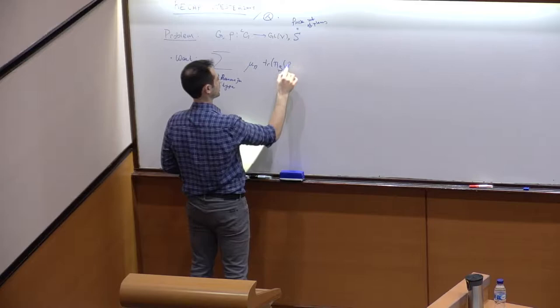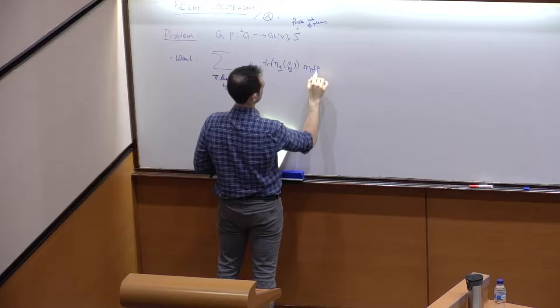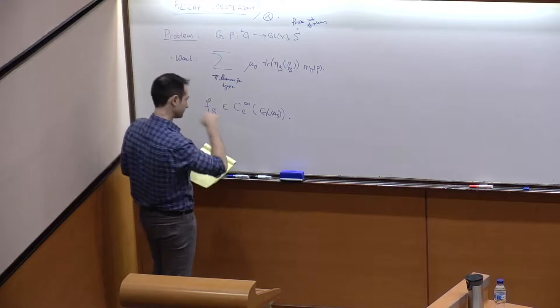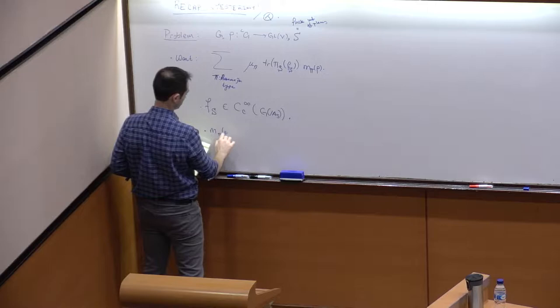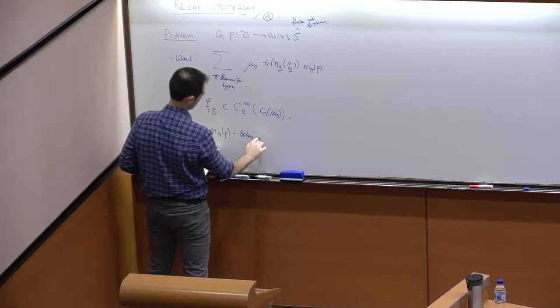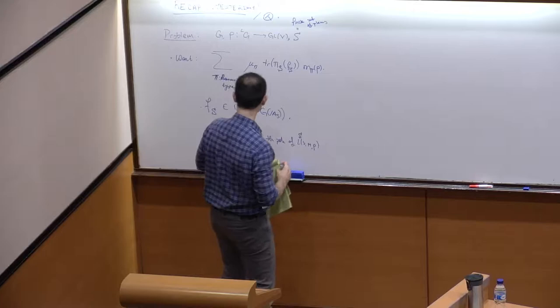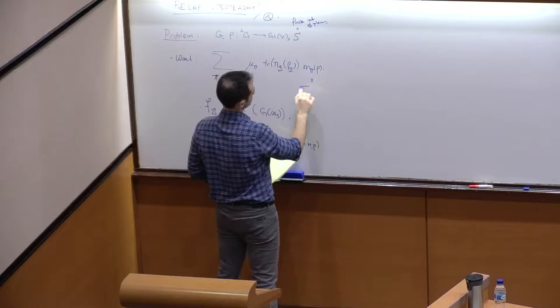We would like to get a formula that looks like the following. F is a compactly supported smooth function on the points in S. And m(π, ρ) was the order of the pole of L^S(π, ρ) — the partial L-function. They should have the same order anyway.